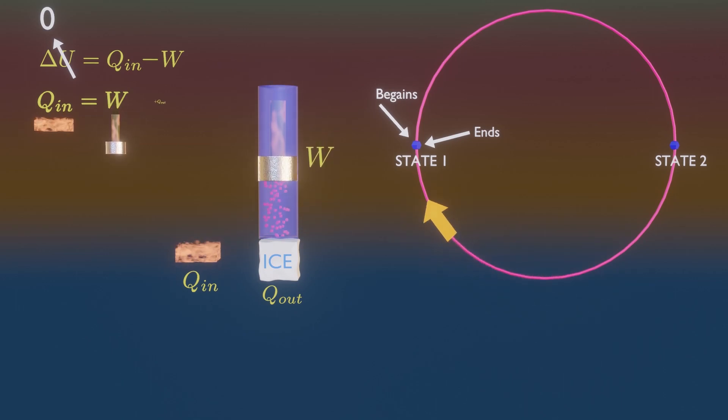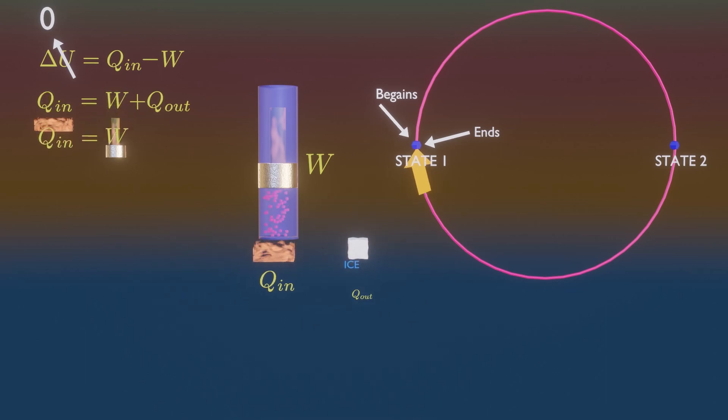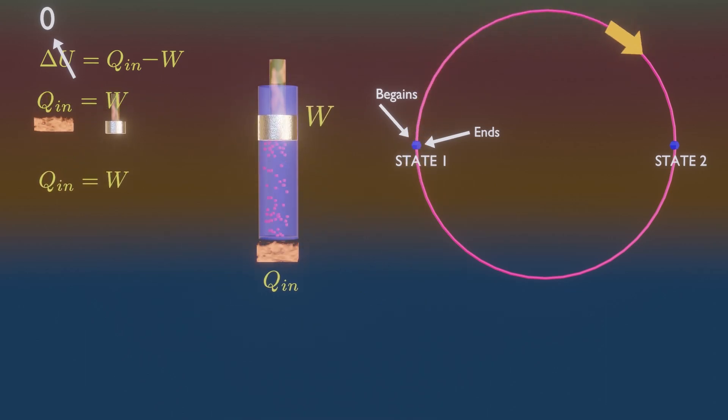In order to complete the cycle, it must reject heat. If somehow it was able to operate on cycle without rejecting any heat, then every heat is converted to work. There is no heat loss and it violates second law.